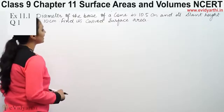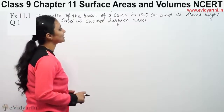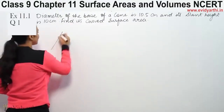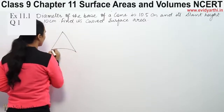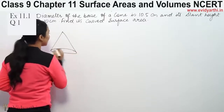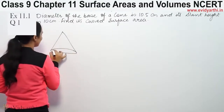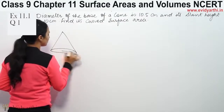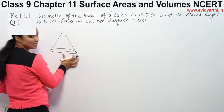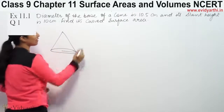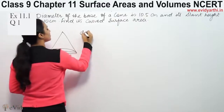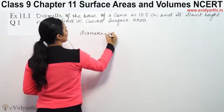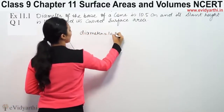The question says the diameter of the base of a cone is 10.5 cm. So we have a cone here, and the base diameter given is 10.5 cm.